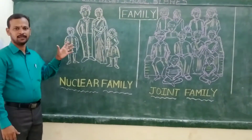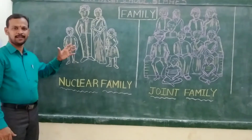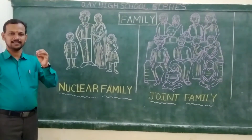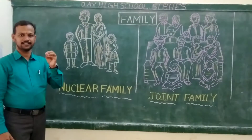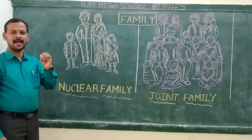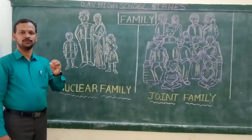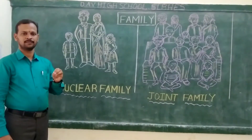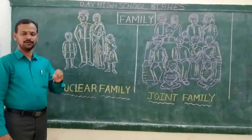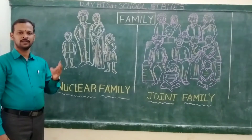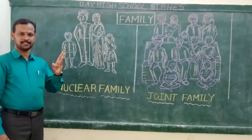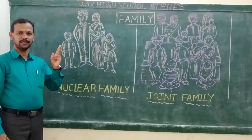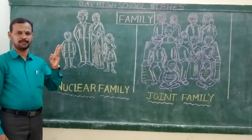Now let us get into the class 8 English textbook. The class 8 English textbook has been divided into 8 units. Each unit consists of 3 reading sections: Reading A, Reading B, and Reading C.